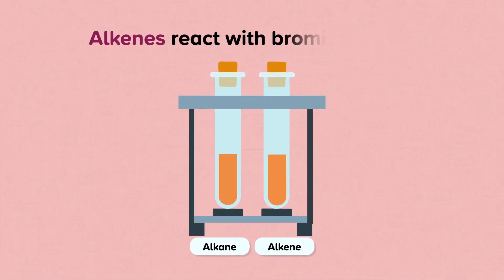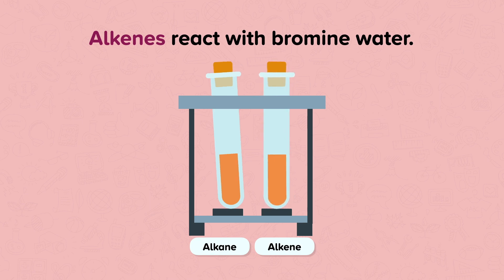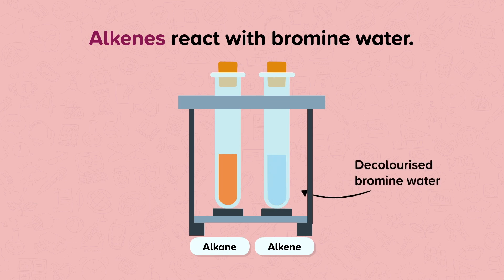Alkenes are more reactive than alkanes and react with bromine water, so it can be used to distinguish between saturated and unsaturated hydrocarbons — alkanes and alkenes. Bromine water is an orange solution of bromine. It becomes colourless when it is shaken with an alkene. Alkenes decolourise bromine water, but alkanes cannot. There is no change to the bromine water containing an alkane.